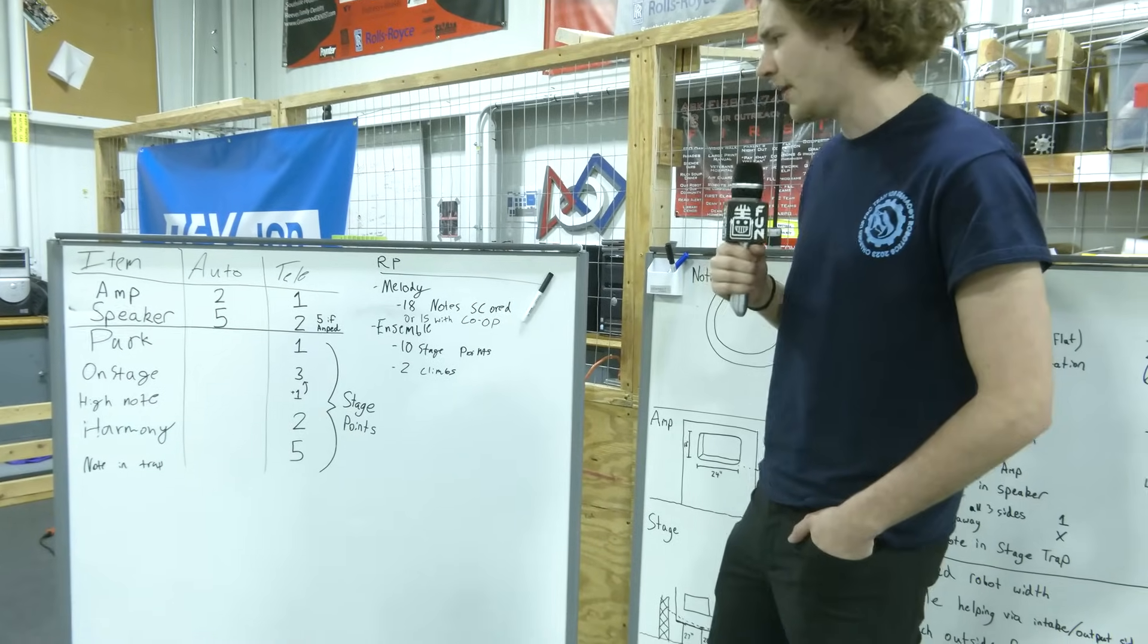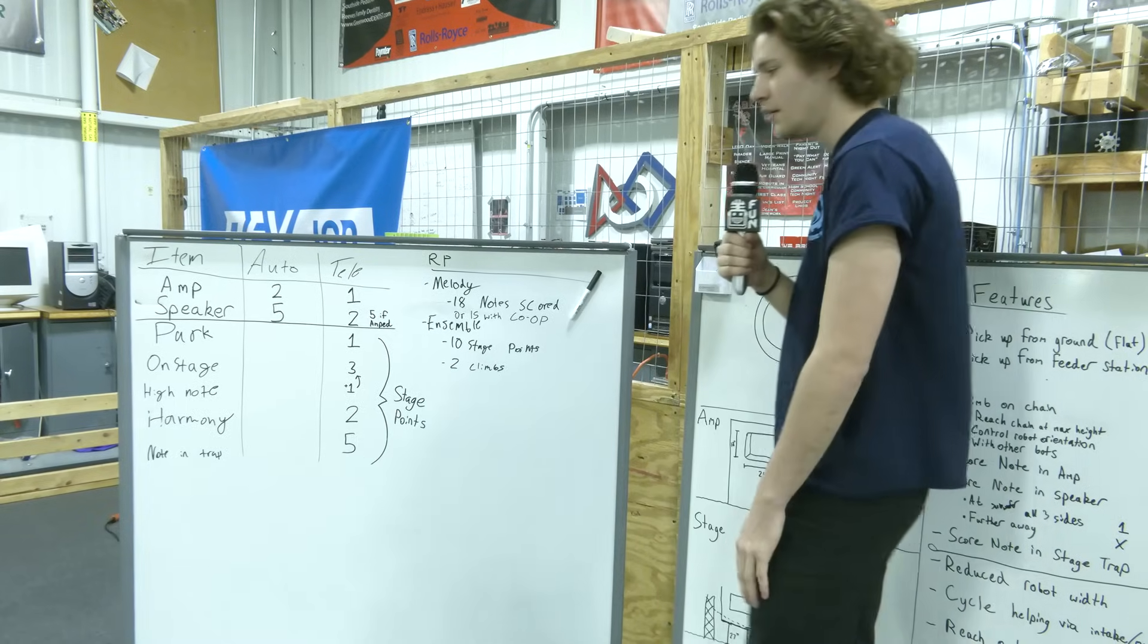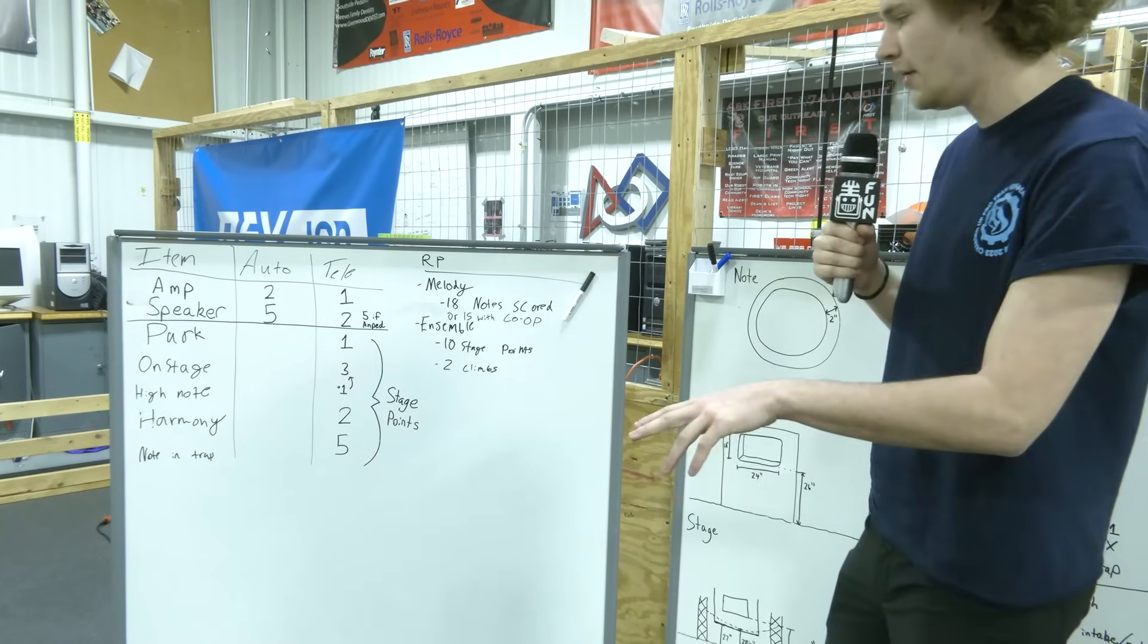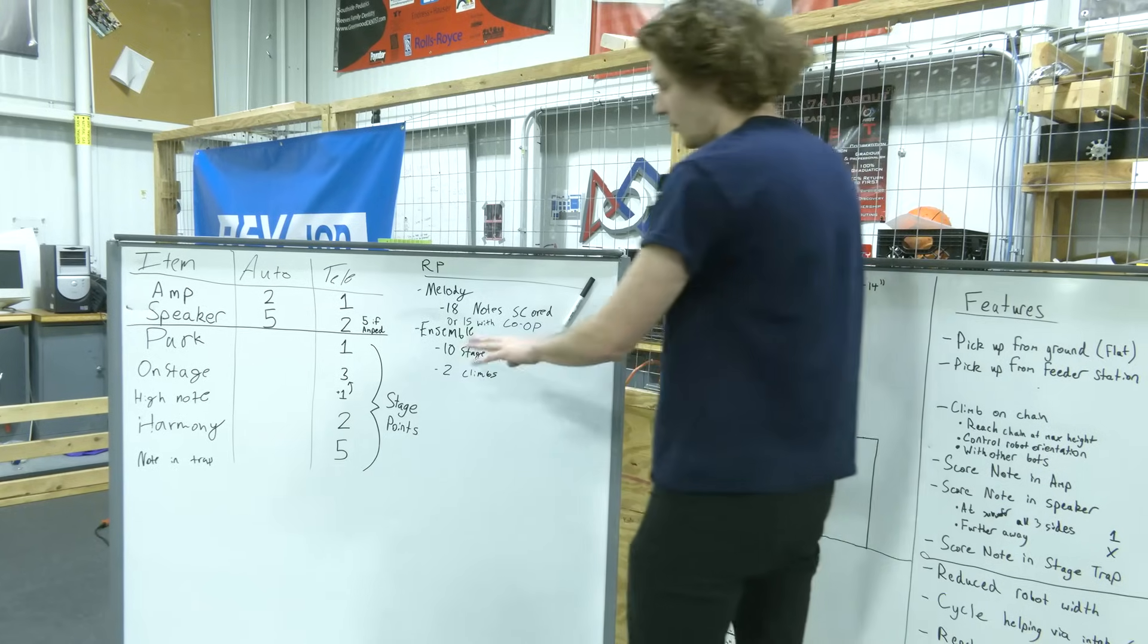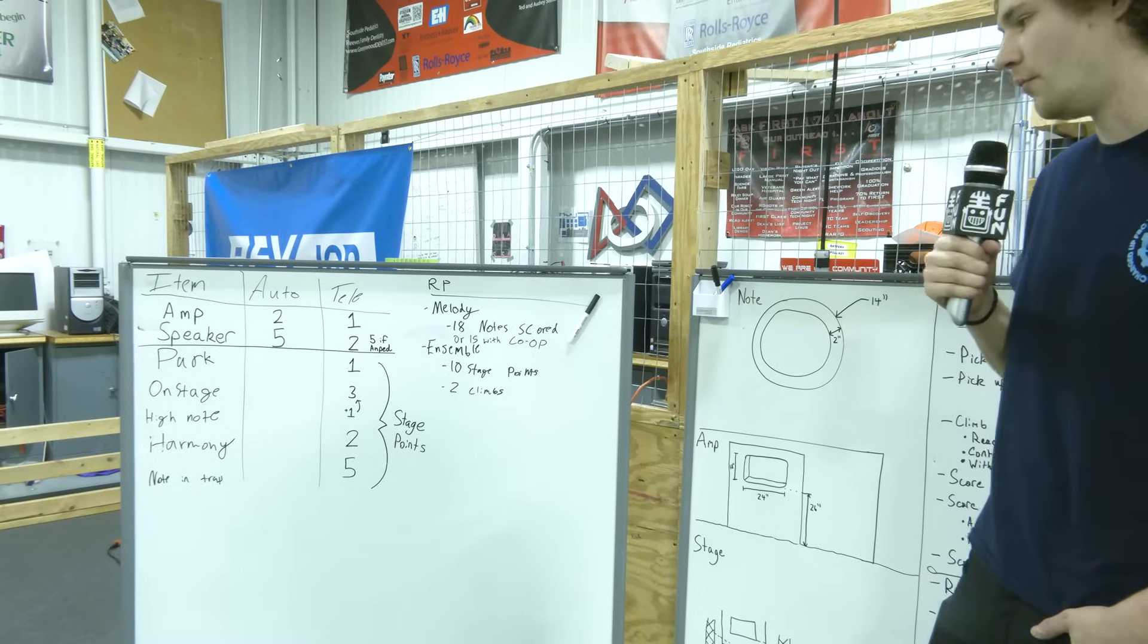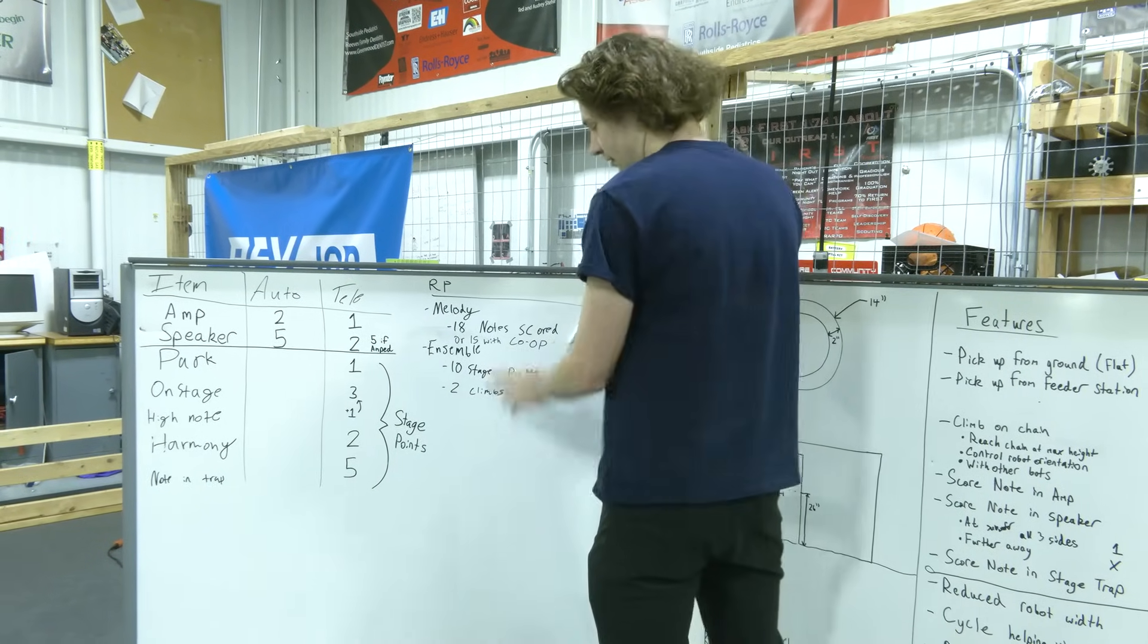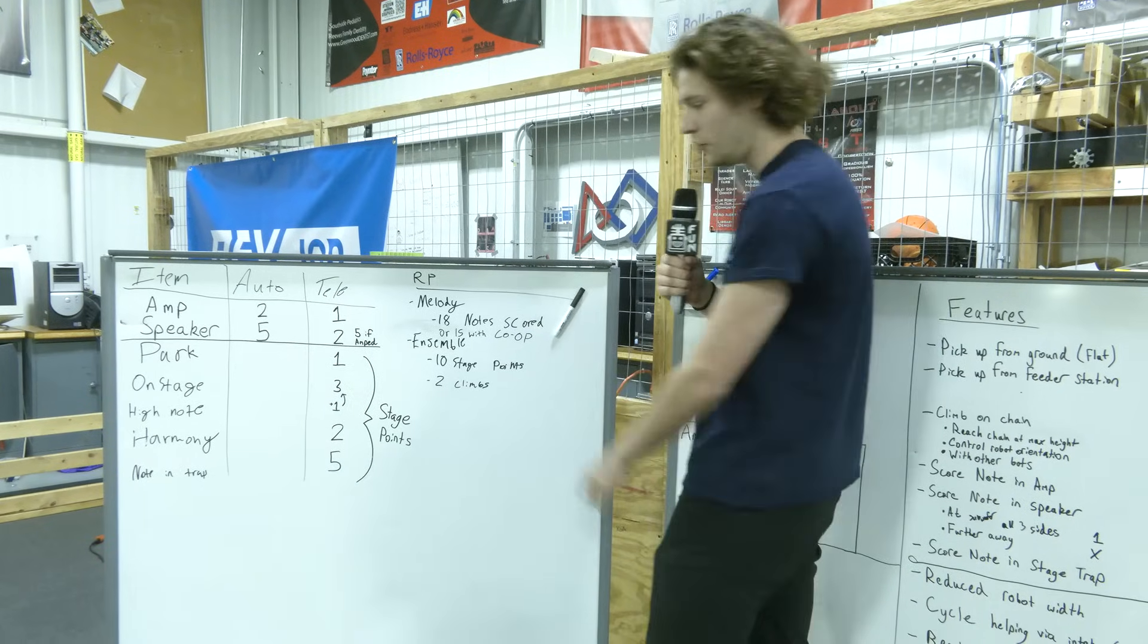The most common way that I've seen is going to be two robots parking for six points, and then them going to be in harmony and then a third robot also climbing. That's a really easy way to get 10 points with just three robots. There is a way to do it with two robots to get the 10 points and not utilizing the trap at all.